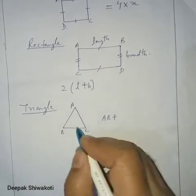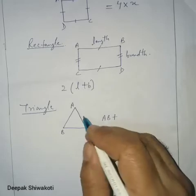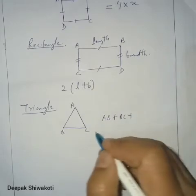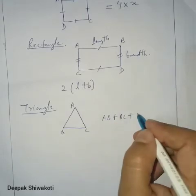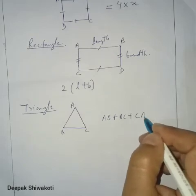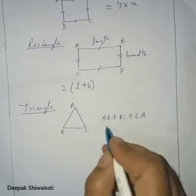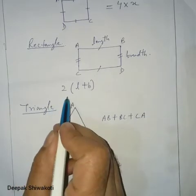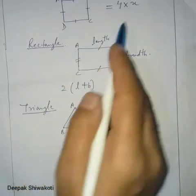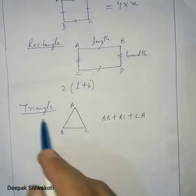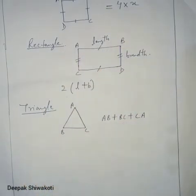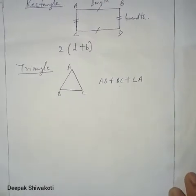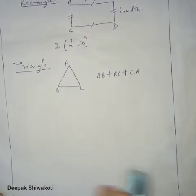The perimeter of a triangle is the length of AB plus BC plus CA. Now let us discuss area.